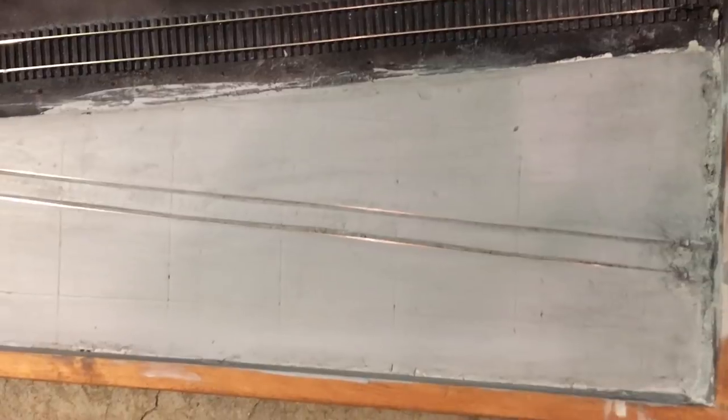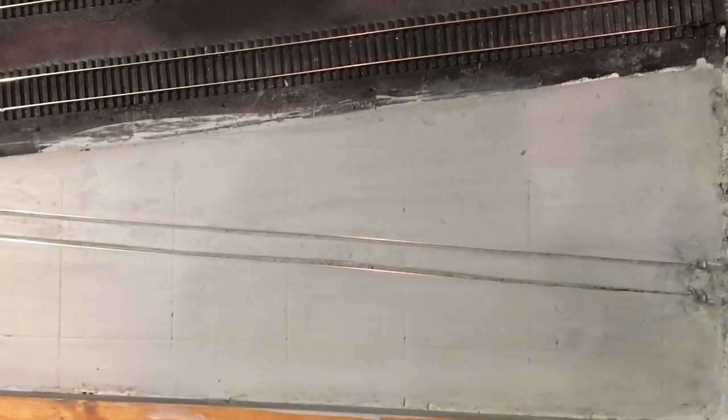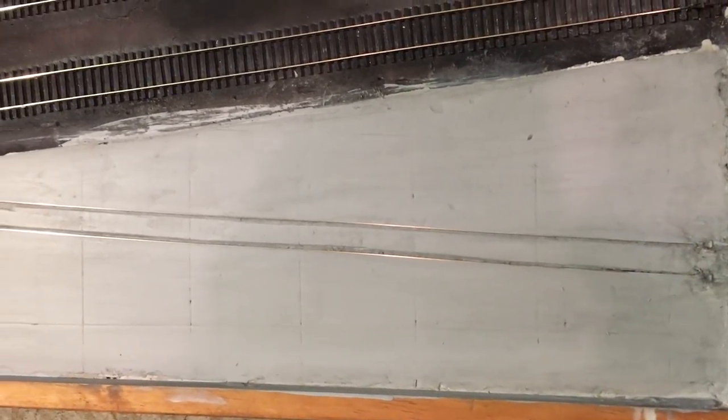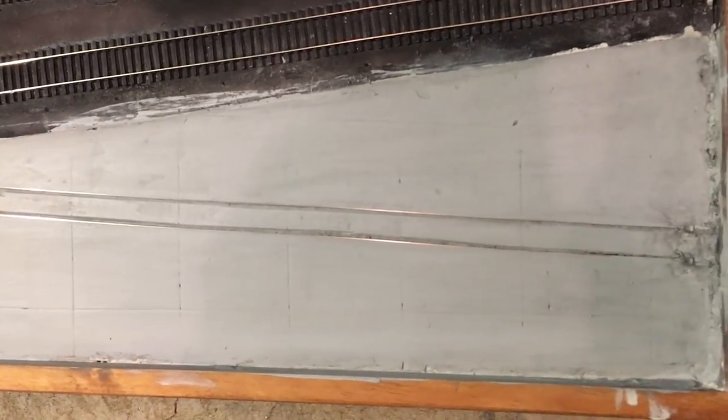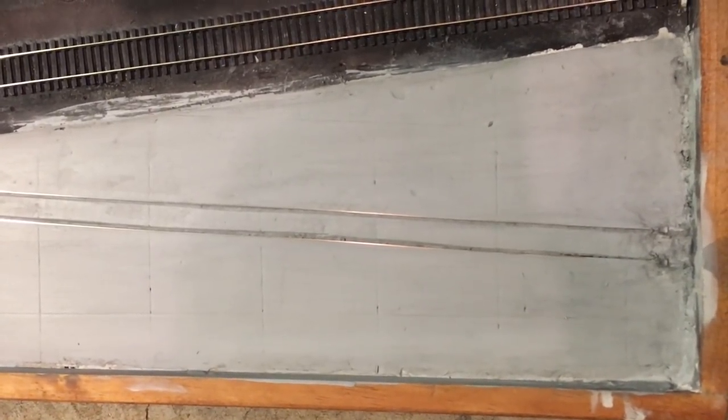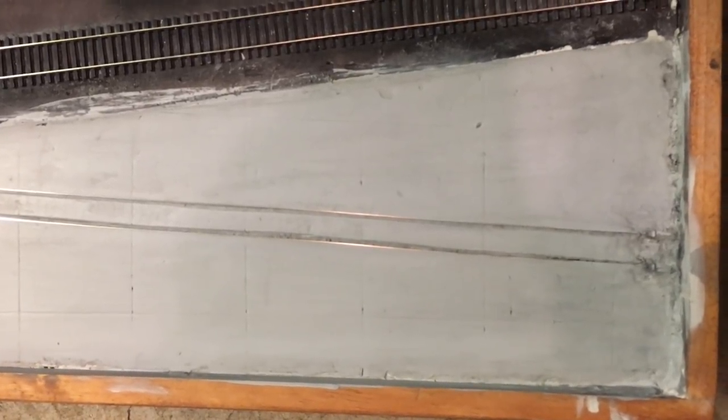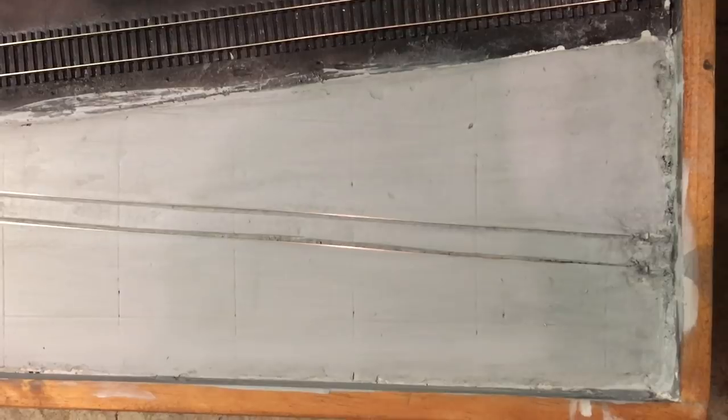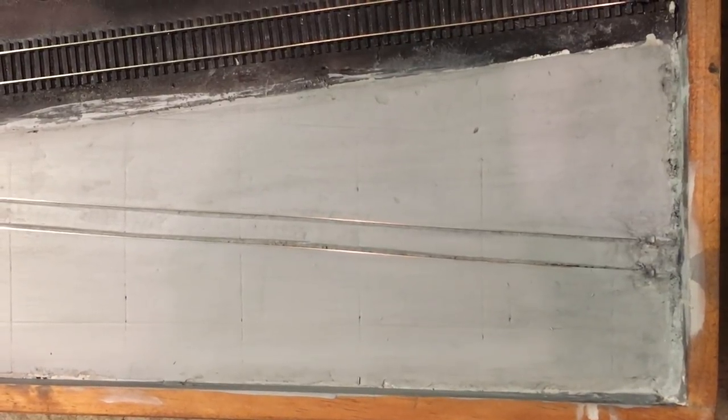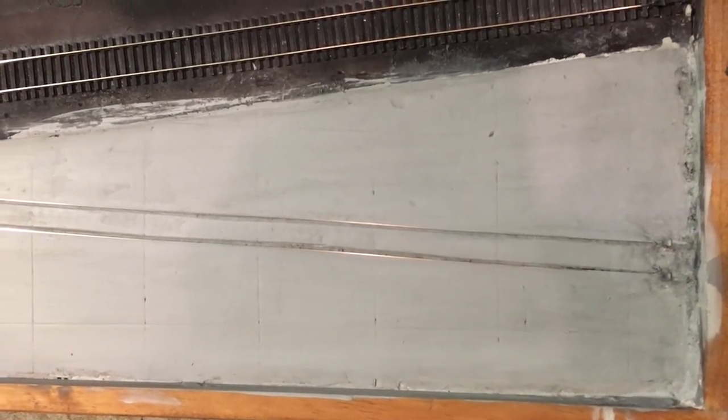This side here was pretty much the same as on the other side of the layout. Again, just the multiple coats of the plaster material sanded smooth, carved the expansion joints in there with the back of a knife, did a couple coats of black wash to provide the aging effect and kind of show the expansion joints a little bit more. Like the other side, I'll go ahead and do some more weathering and detail after I do the surrounding scenery work.